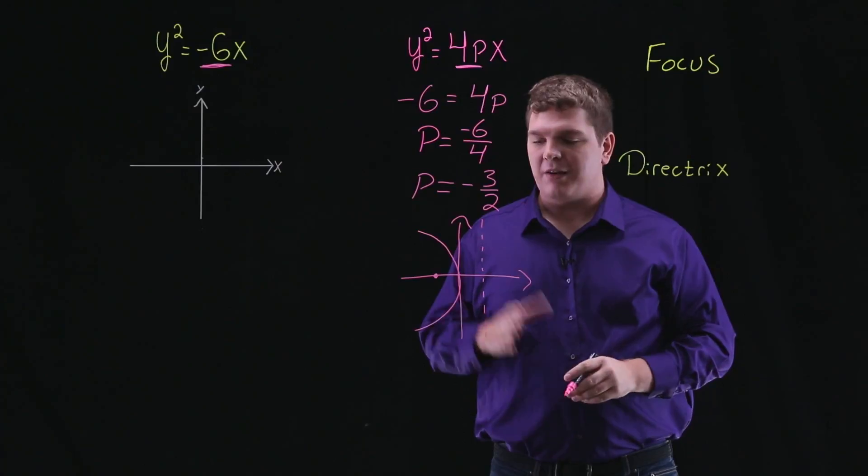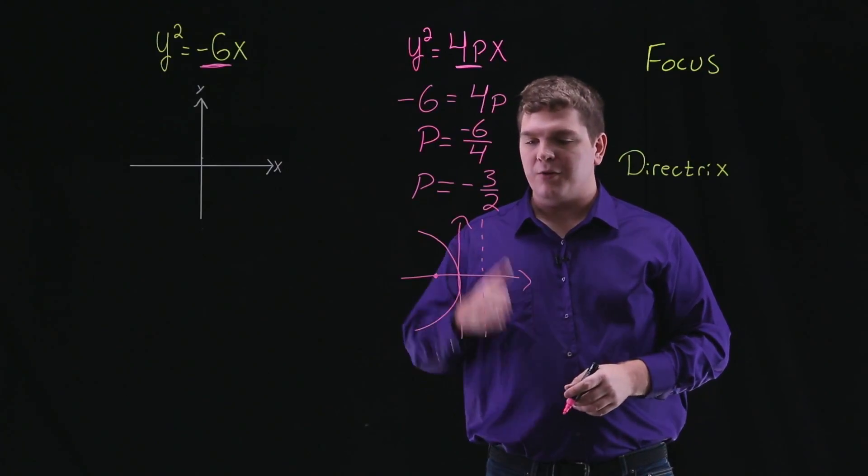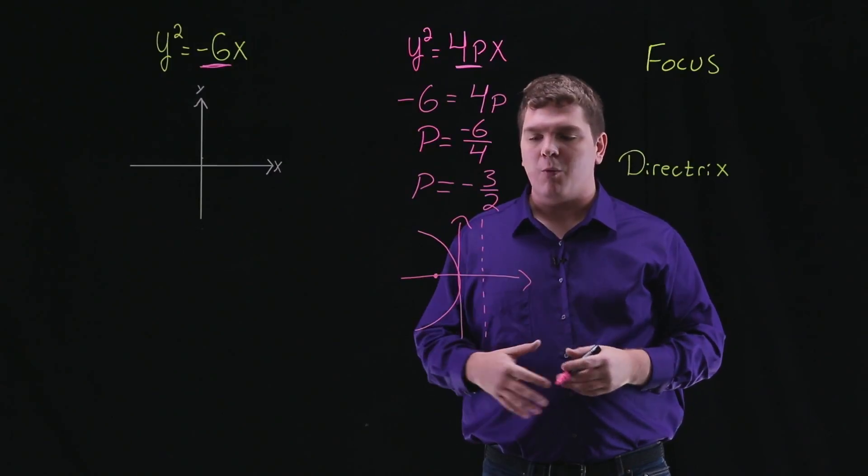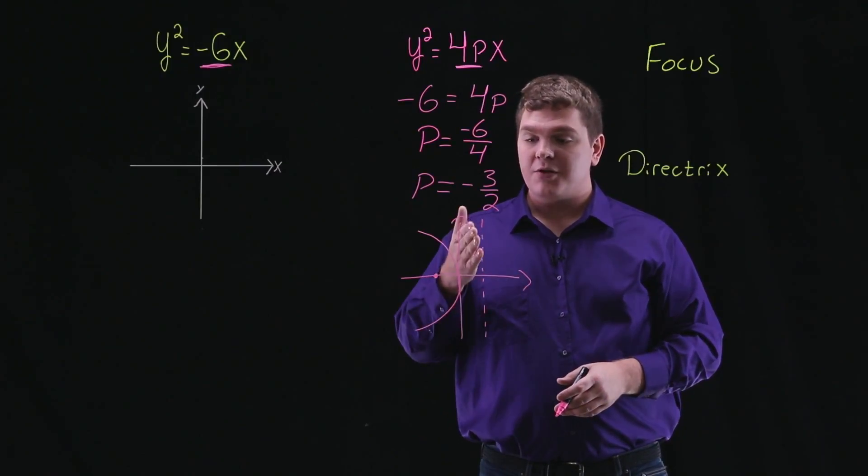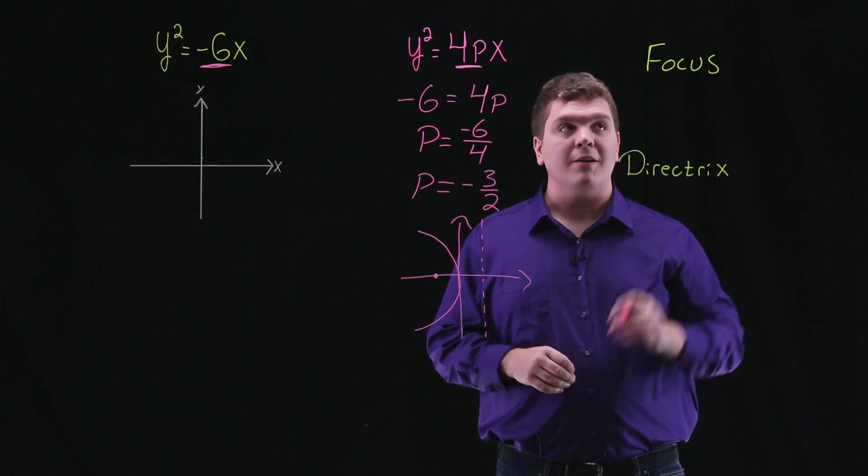The focus should have a negative x value and the y coordinate should be 0, and the directrix should be a line x equals some number, and it all relates back to this p here.